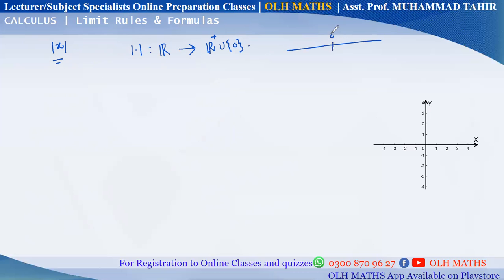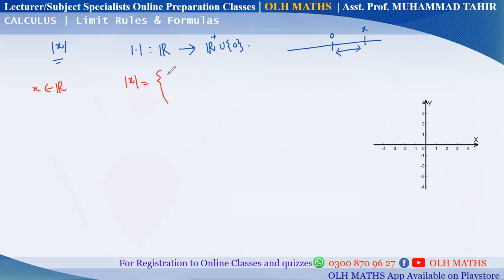The absolute value represents the distance of a real number from zero, which is always positive. We define it as: the absolute value of x is equal to x, if x is greater than or equal to 0.